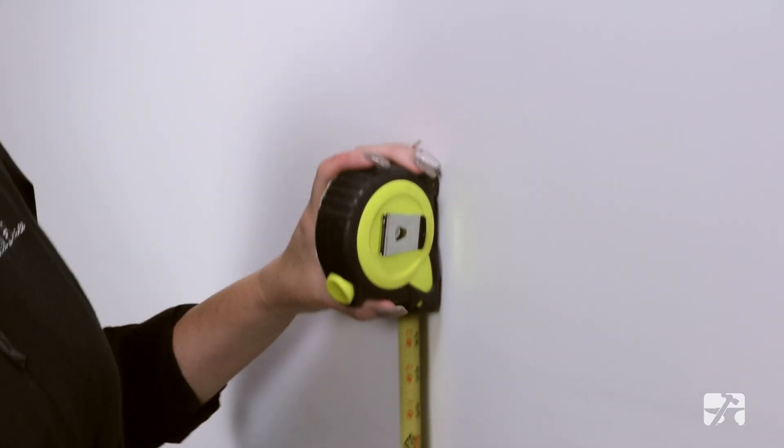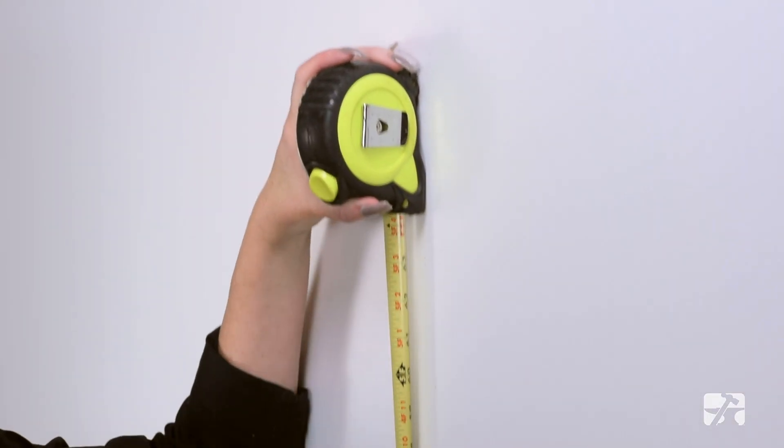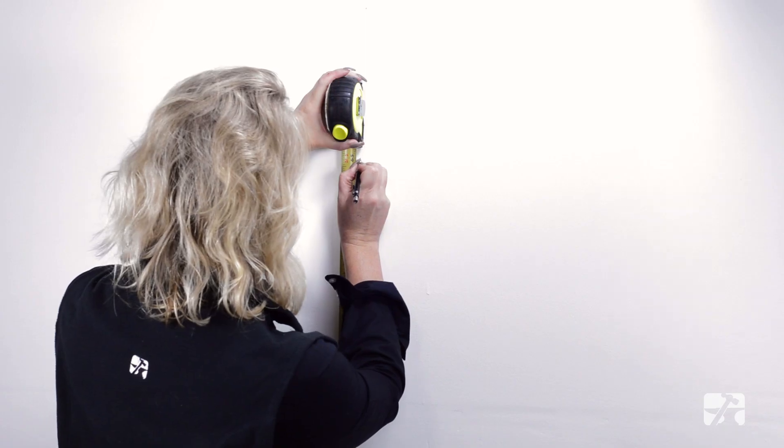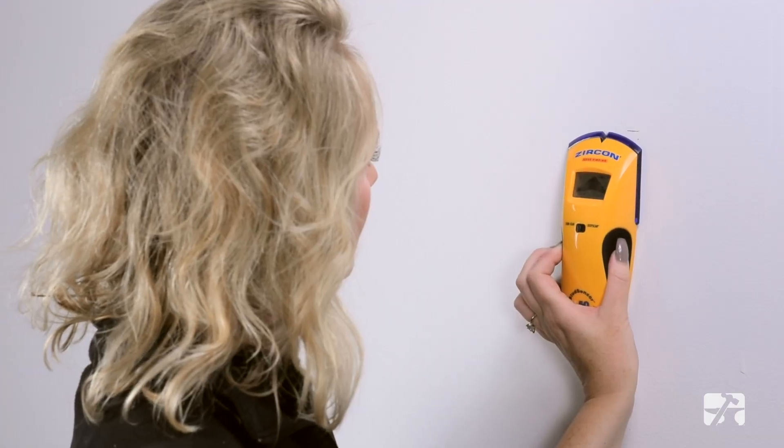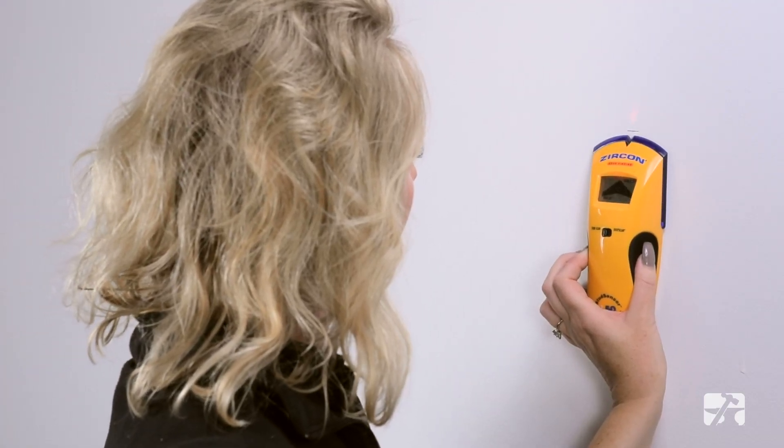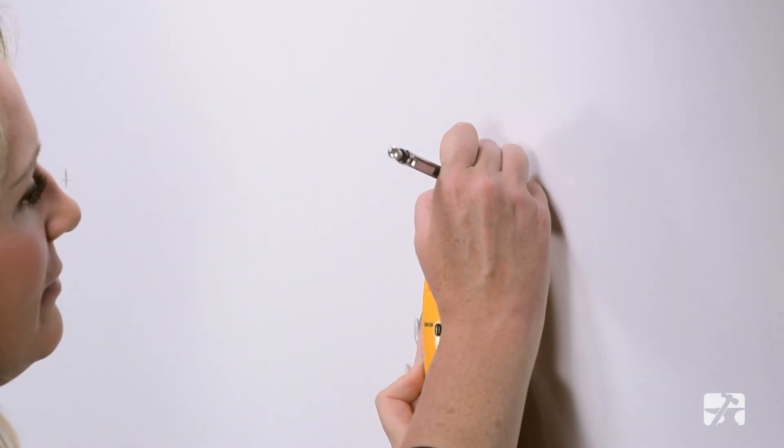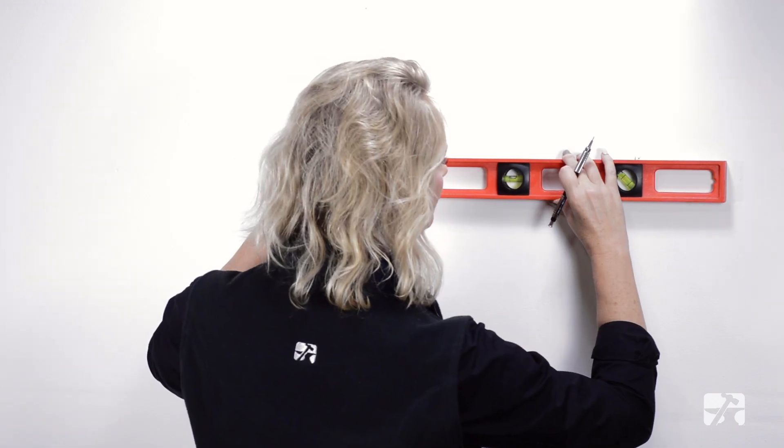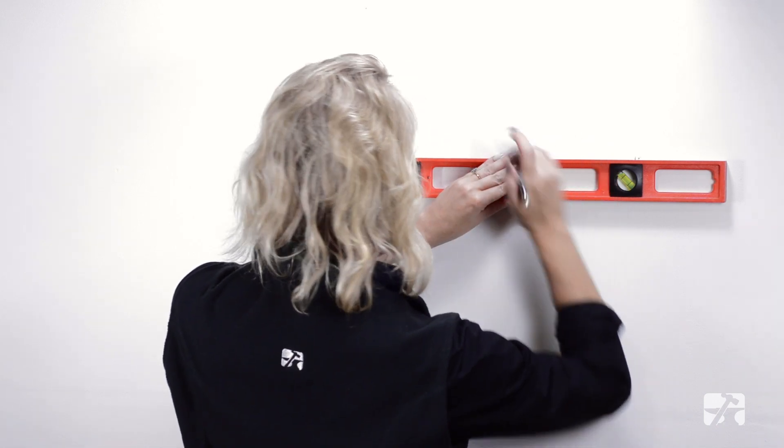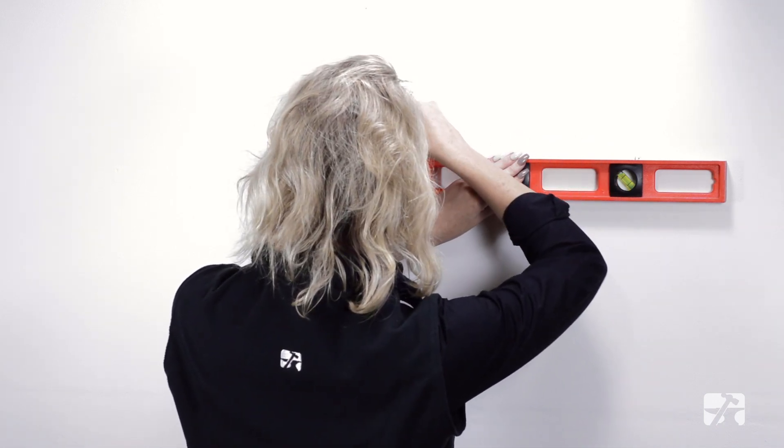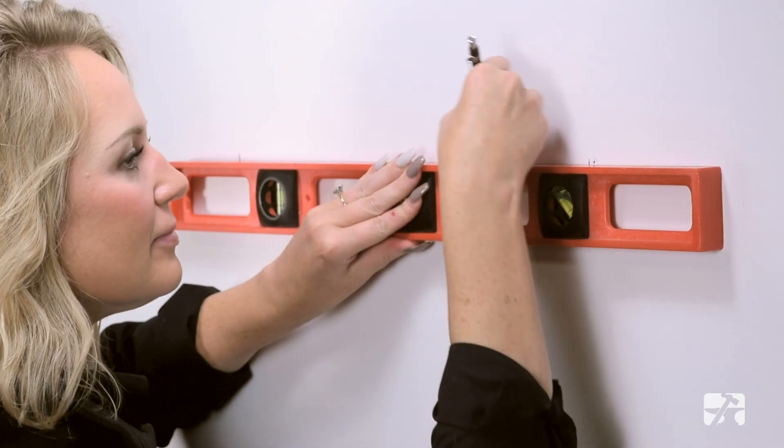Let's go check out how it's installed. Determine the height of the shelf bracket by measuring from the floor with a tape measure and make a horizontal mark. Using a stud finder, locate the center of the wall stud and make a vertical mark. Locate the center of the second wall stud and make a vertical mark. Place the level on the first horizontal mark and draw a level line from the first vertical stud mark to the second vertical stud mark.